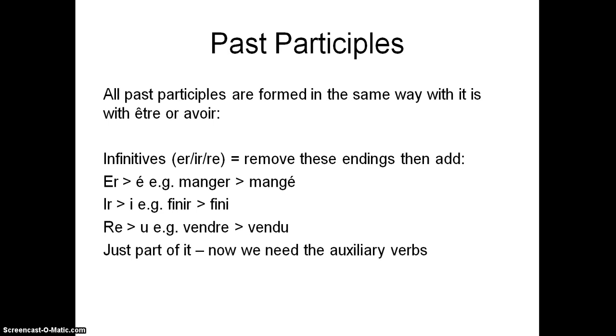So now we need to have a look at the auxiliary verbs. Do we use avoir or do we use être? But just before we do that, let's have a look at some irregular past participles. We've looked at the past participles and how the regular ones form - ER changes to é, IR changes to i, RE changes to u. There's some that don't follow the rules. This is a list of some of them, but it's not an exhaustive list.